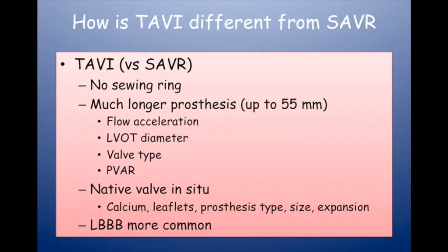Left bundle branch block — especially with self-expanding valves like the CoreValve — occurs in up to 20%. You can also get left bundle branch block without a pacemaker, causing LV dyssynchrony. That might worsen mitral regurgitation, worsen LV function, and affect your gradient assessment. If LBBB occurs between day one and a later study, you might get a different assessment that needs to be taken into account.